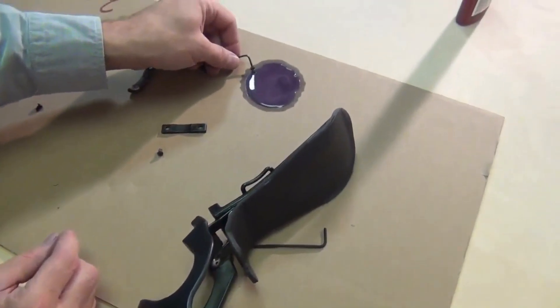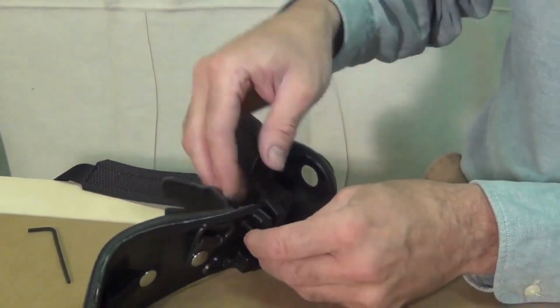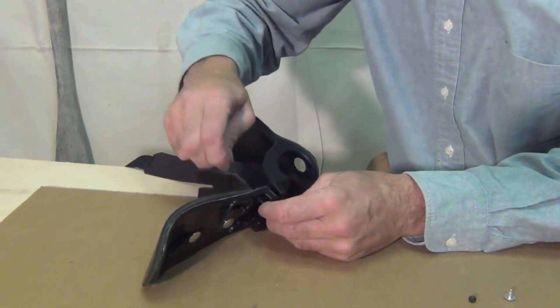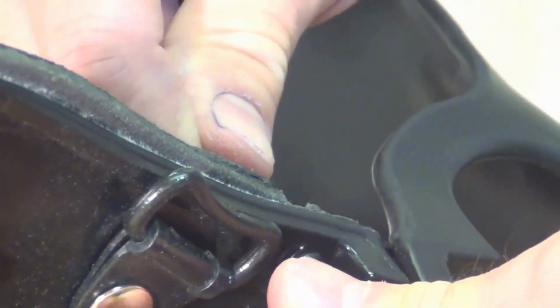And the screw just needs a little bit of Loctite, hardly any at all. And if I don't secure this back nut, that'll just spin, I won't be able to get it tight. It doesn't have to be super tight.